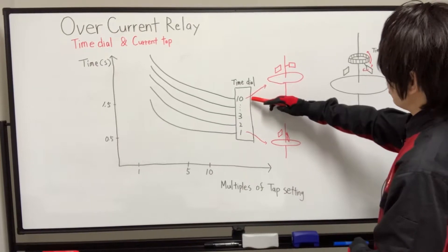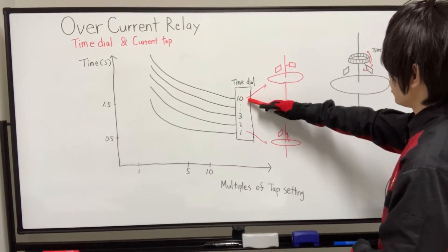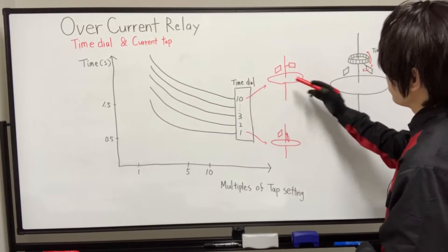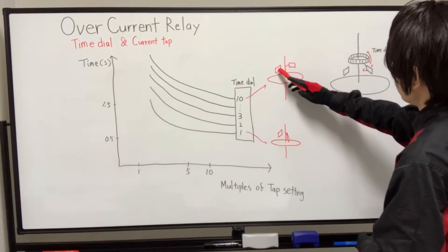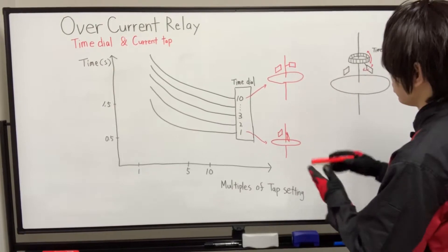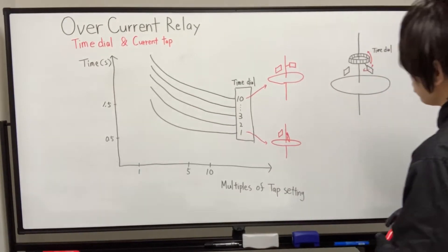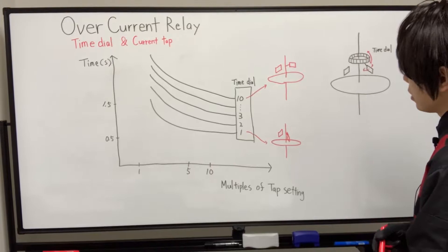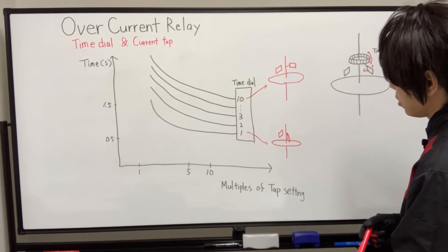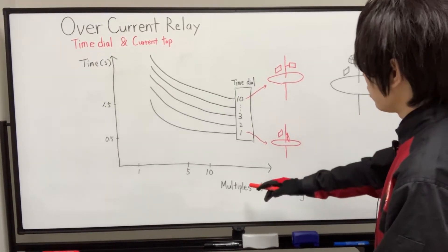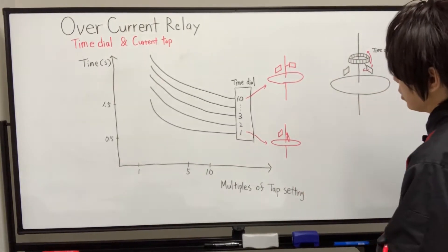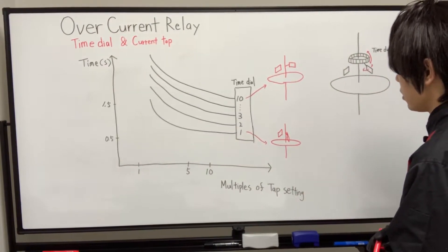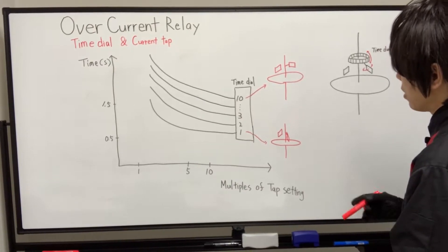While if the time dial is set to number 10, that gives us the longest operating time, so the distance is relatively long. When reading these curves, please remember the value of the current along the base is expressed relative to pickup current, that is, as a multiple of tap setting.